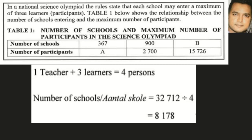We were given the total number of people at the event, so all we need to do is take the total amount of people and divide by four — each school having four people — and we arrive at how many schools there are altogether, which is 8178.